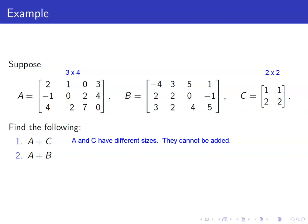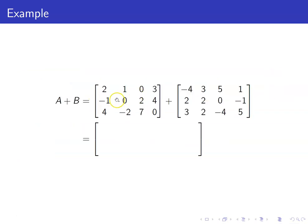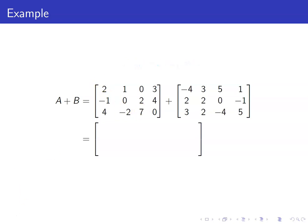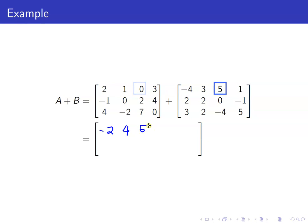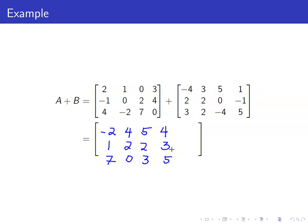Now let's proceed with A plus B. Take note that they have the same size — they are both of size 3 by 4. Both have 3 rows and 4 columns. So let's proceed with the addition, adding them entry-wise: 2 plus negative 4 is negative 2, 1 plus 3 is 4, 0 plus 5 is 5, 3 plus 1 is 4. Adding all of the entries, we now get this matrix.